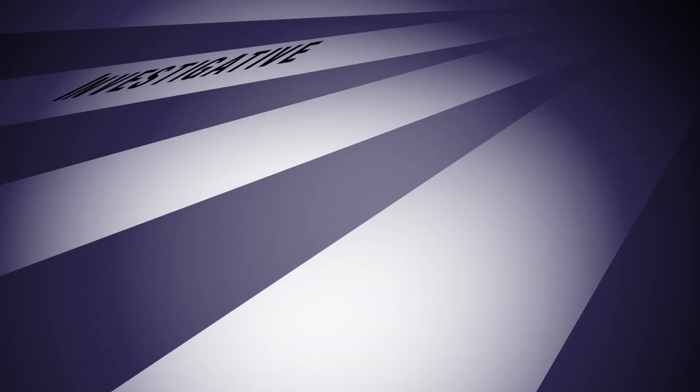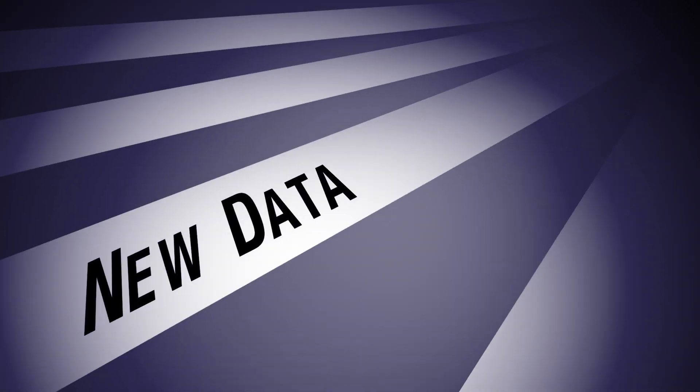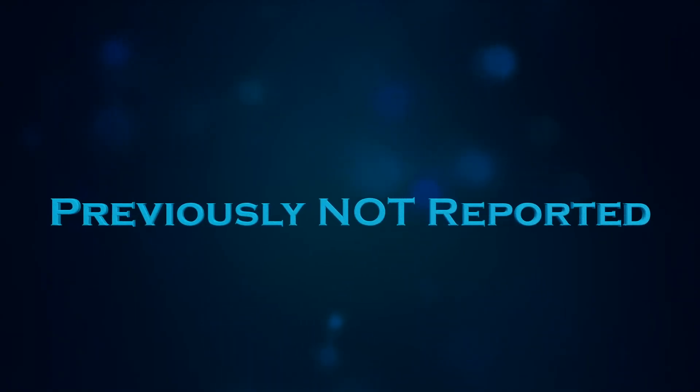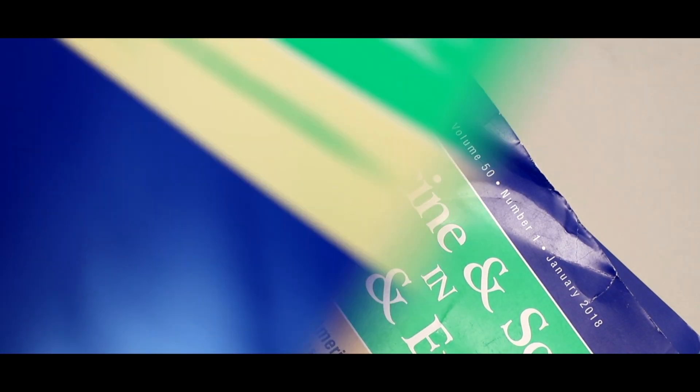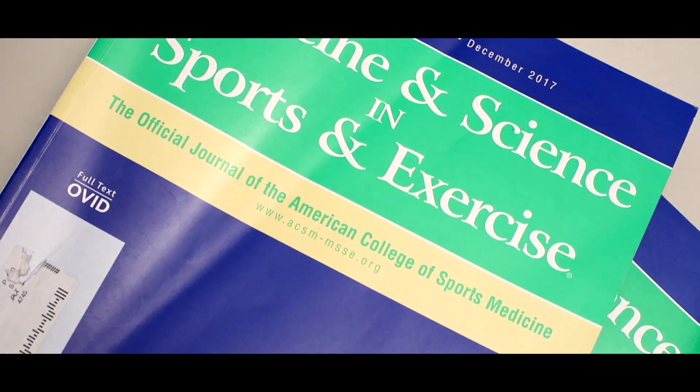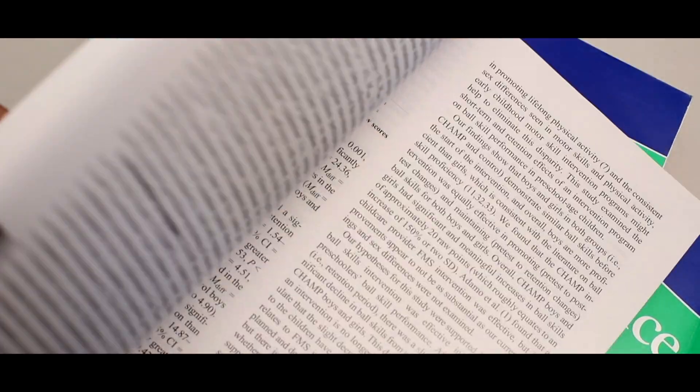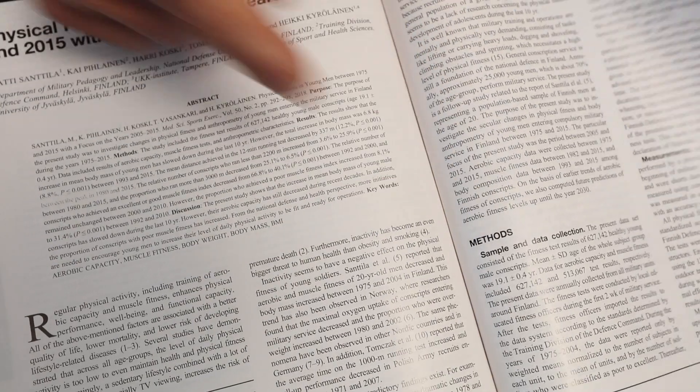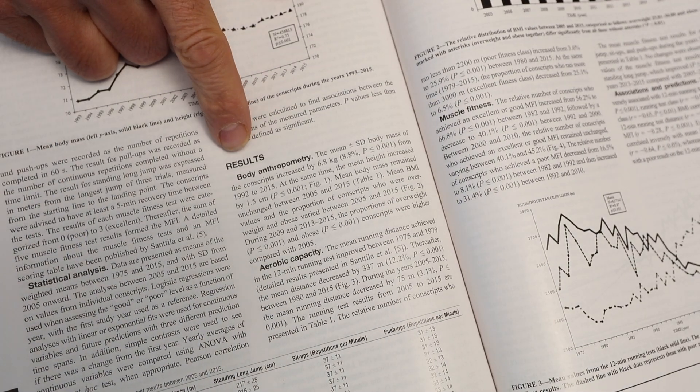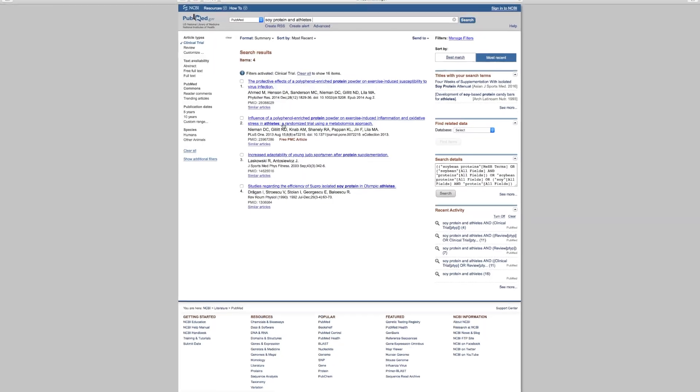Original investigative articles are those that disseminate new data previously not reported. These are excellent for reviewing data directly from the scientists that are conducting the work in their laboratories. An easy way to determine if your article is in fact an original investigative article is to look for a methods, results, and statistical analysis section.